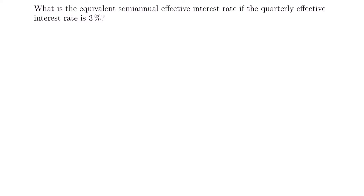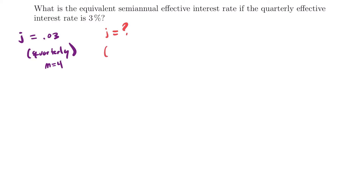Let's write down what we know and what we don't know. We're told that our quarterly effective interest rate is 3%, so J equals 0.03, and that is our quarterly rate. In that case, M would be equal to 4 — that's the number of times that rate is compounded per year. We want to find the equivalent semi-annual effective interest rate, which is a different rate J, and that's our unknown. Semi-annual means it occurs twice per year, so M equals 2.